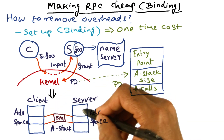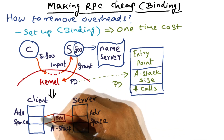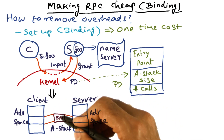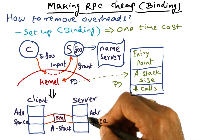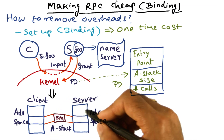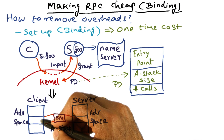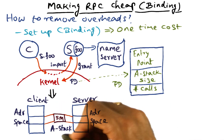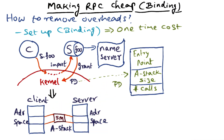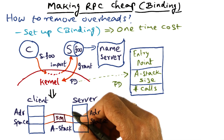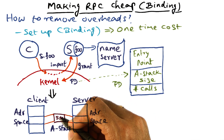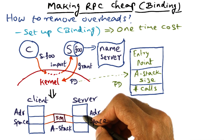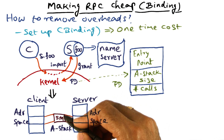This is the client's address space, and this is the server's address space. In some part of the client address space and the server address space — not necessarily exactly matching parts of the virtual memory space — somewhere in the address space of both the client and the server, the kernel maps this A stack. Essentially, what we have now is shared memory for communication directly between the client and the server, without mediation of the kernel.